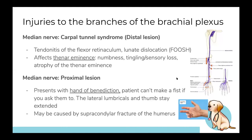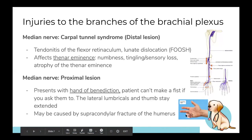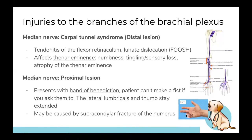A proximal median nerve lesion, such as from a humeral fracture, produces the hand of benediction. You ask the patient to make a fist, and they can't close the lateral three fingers — they remain extended. This looks similar to another sign we'll cover, but there are key differences.